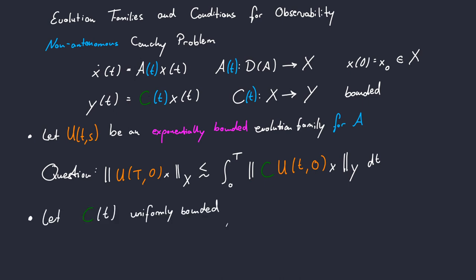One of these additional conditions is that we want our family C(t) to be uniformly bounded. This means that with respect to the operator norm C(t) is less or equal than some constant delta.